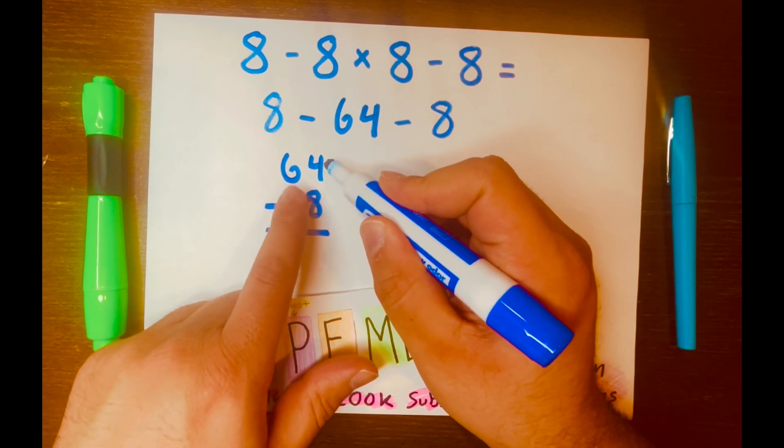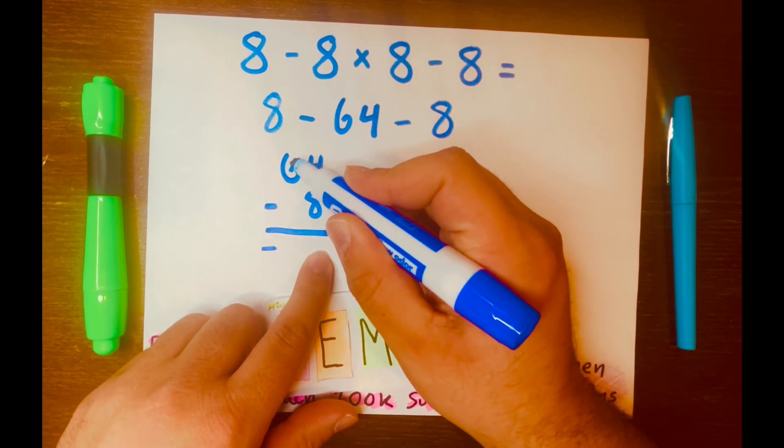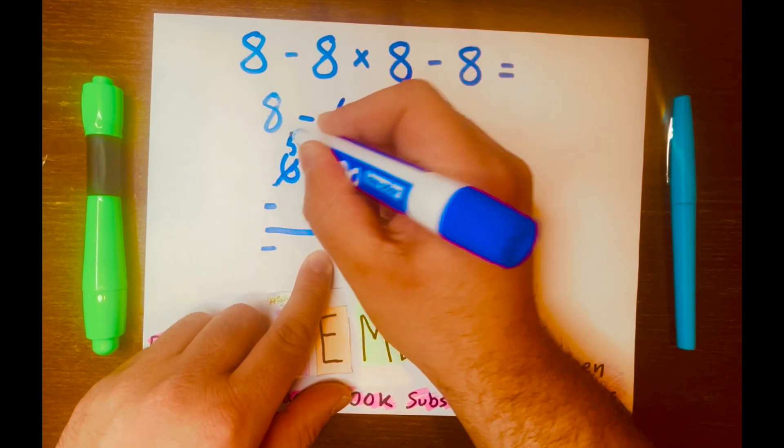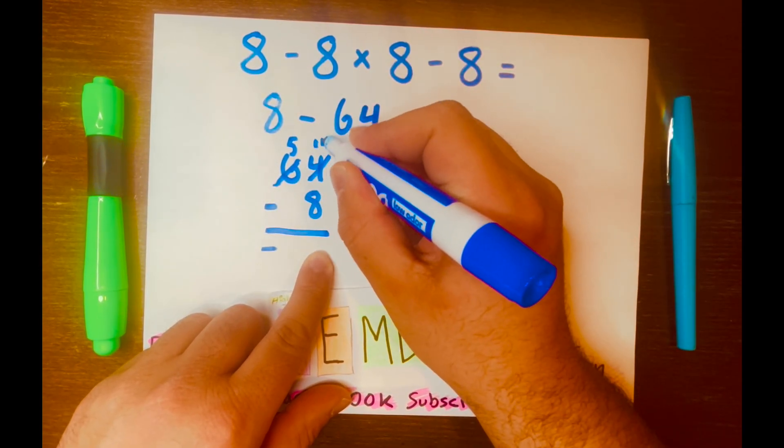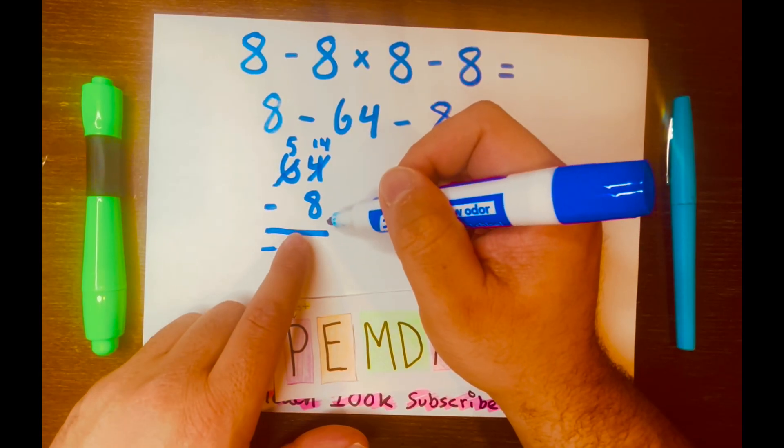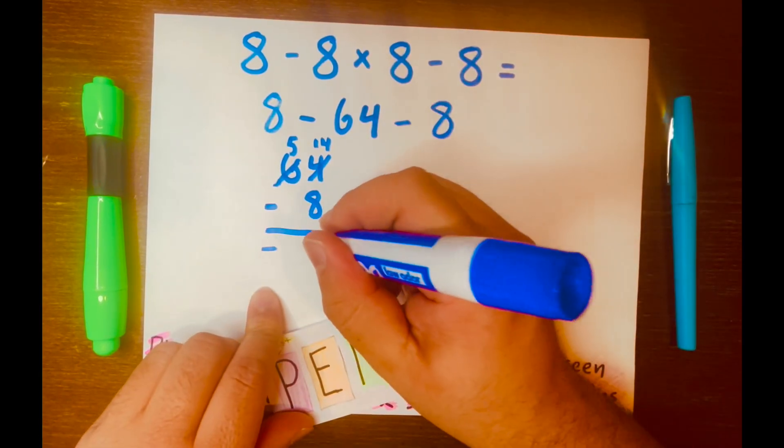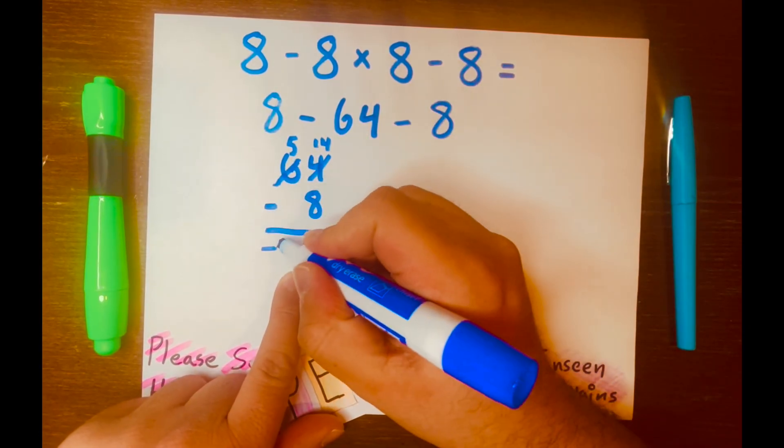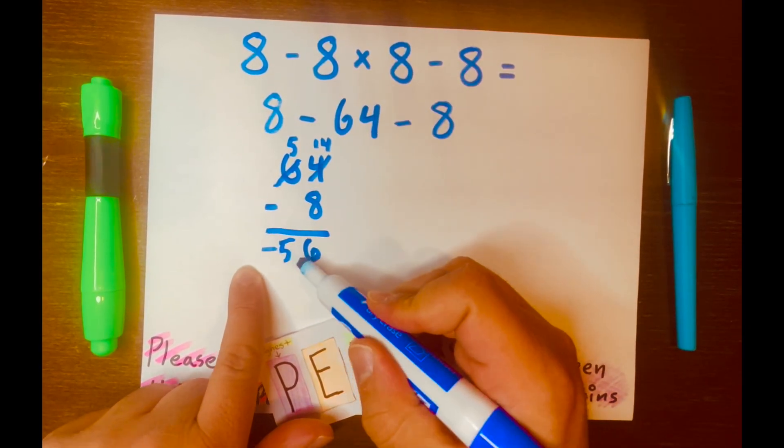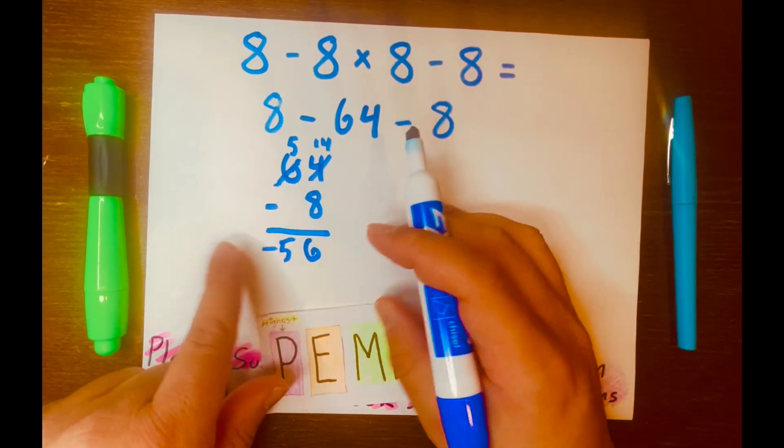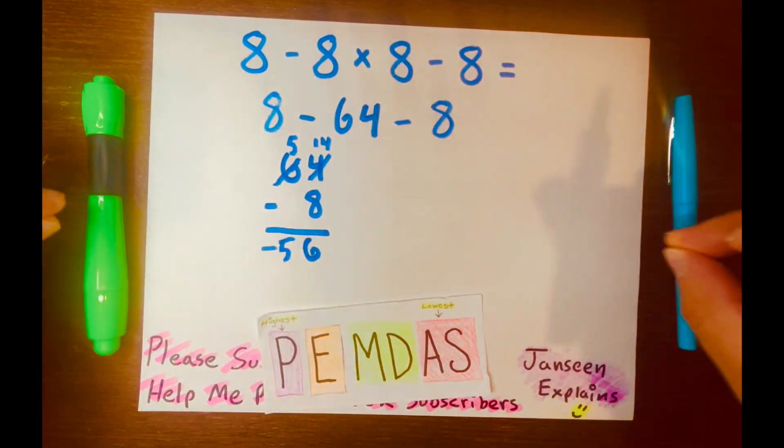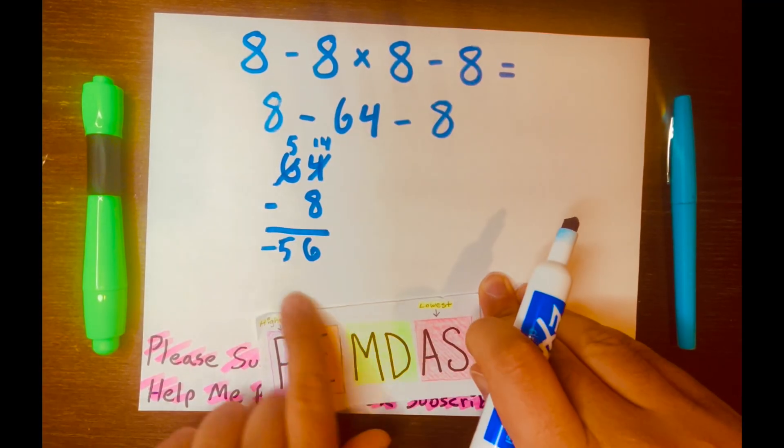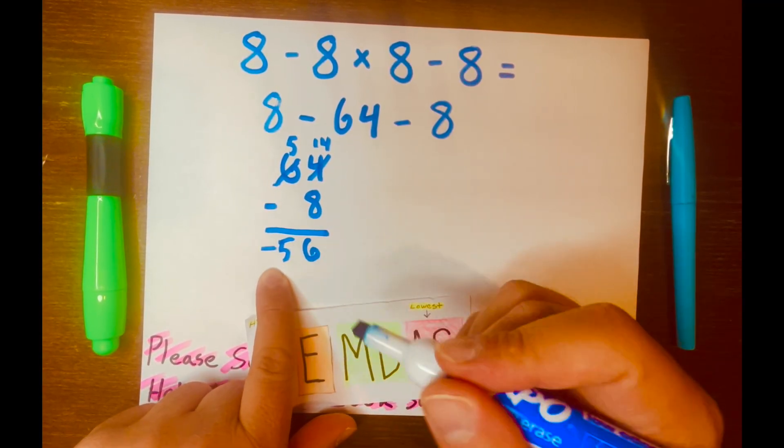So 4 minus 8, we can't. So we need to borrow from the 6. So the 6 will be 5. This will be 14. So 14 minus 8 is 6, right? And I bring down the 5 down. And now we have negative 56. So if we drew the number line starting at 8 and go back 64 units to the left, we will land at negative 56.